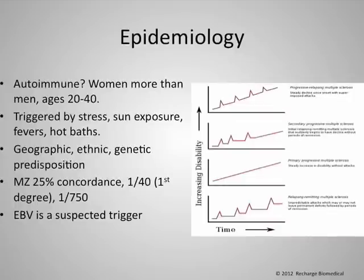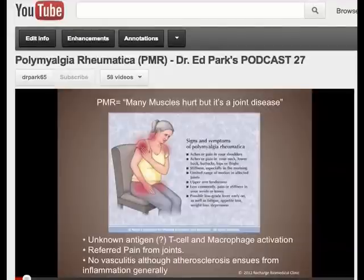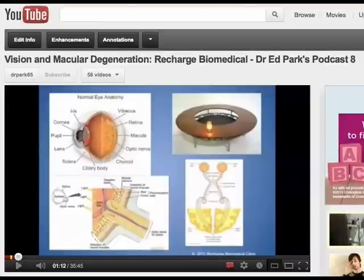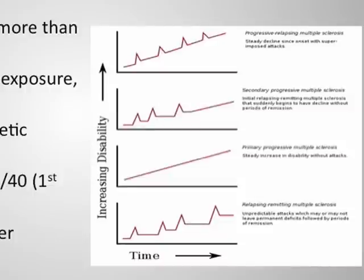The epidemiology of this disease is interesting. It appears to be autoimmune of some kind. Women are affected more than men, and this is not necessarily a classical aging disease. This is an early onset — you can even have it in childhood. Once you have it, it appears to be triggered by stress, sun exposure, fevers, and heat — all these things are stressors.